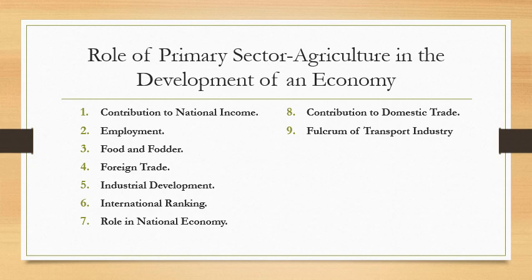5. Industrial Development. In India, agriculture plays an important role in industrial development. Agriculture provides raw materials to the industries. Cotton and jute textile industries, sugar, vanaspati, and plantations depend on agriculture.